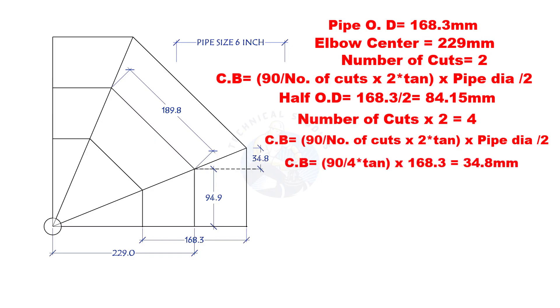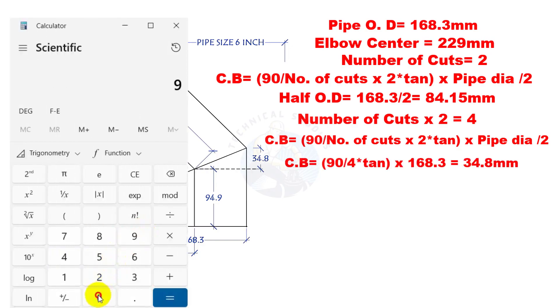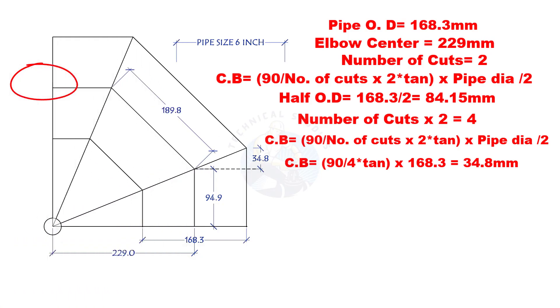Let us apply the formula. So, the cutback is 34.8 mm. You can cross-check this answer in another method or check on a layout.